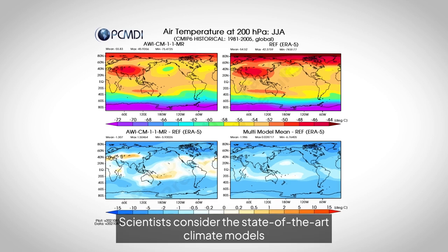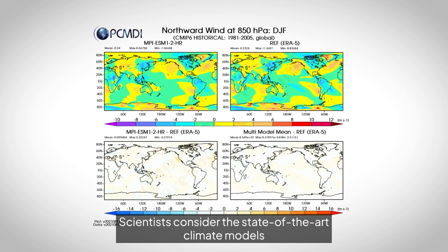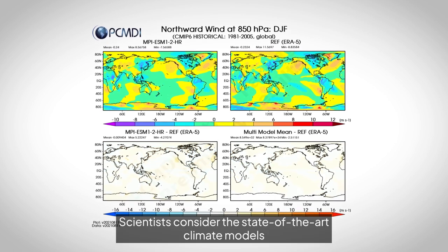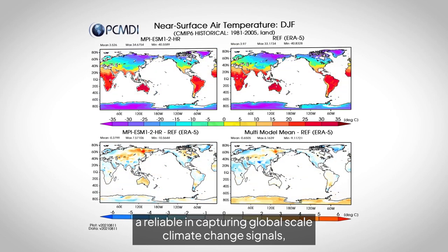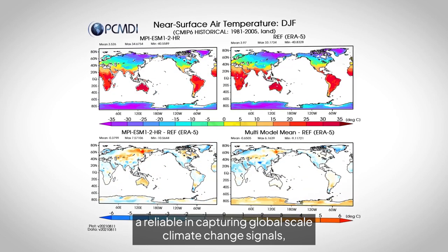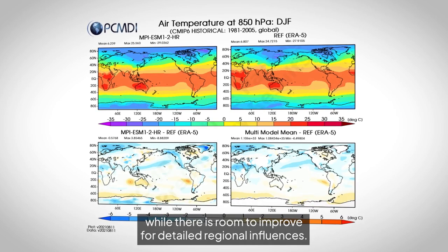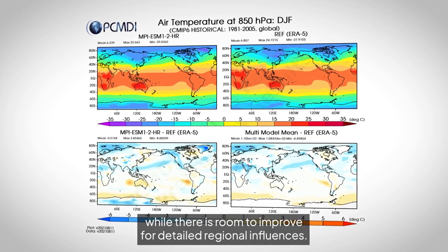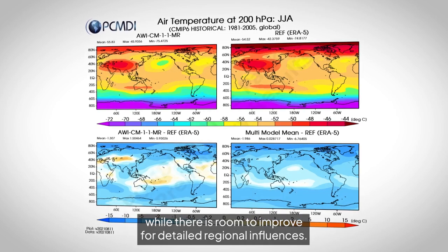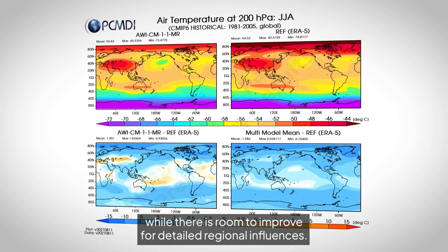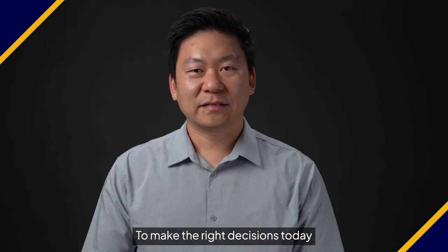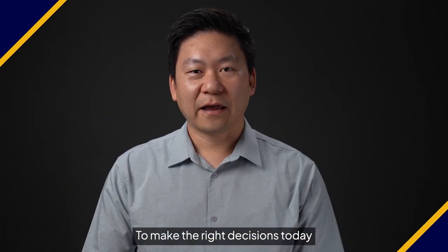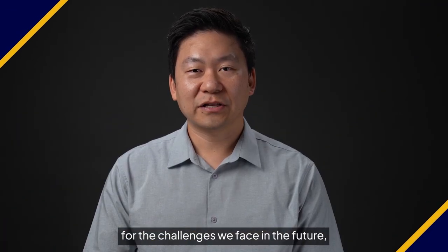Scientists consider the state-of-the-art climate models reliable in capturing global-scale climate change signals, while there is room to improve for detailed regional influences.